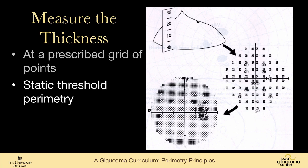This is static threshold perimetry — the target is not moving, and it's measuring the threshold of a point. This has changed with strategies like SITA that speed up the process. In full threshold fields, which were quite slow, the light would get brighter and brighter until it crossed threshold, then you'd go back down in smaller steps until it crossed again. You wouldn't stay at one point — you'd present a target here, go off and do other things, then come back with a dimmer target. Otherwise, the patient would fixate and you'd get summation of targets. It's a very smart machine.